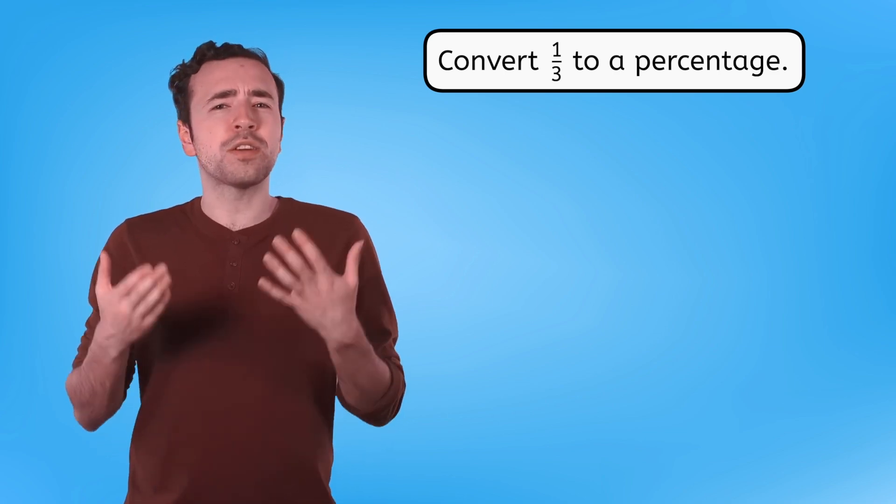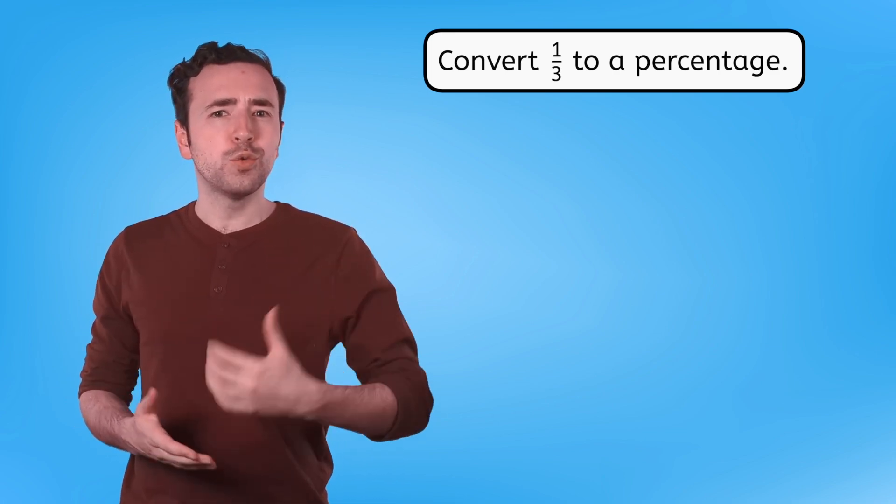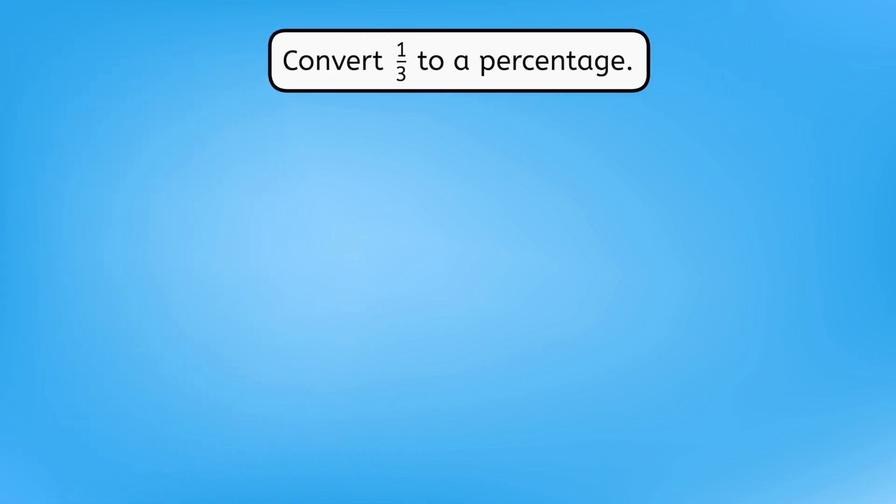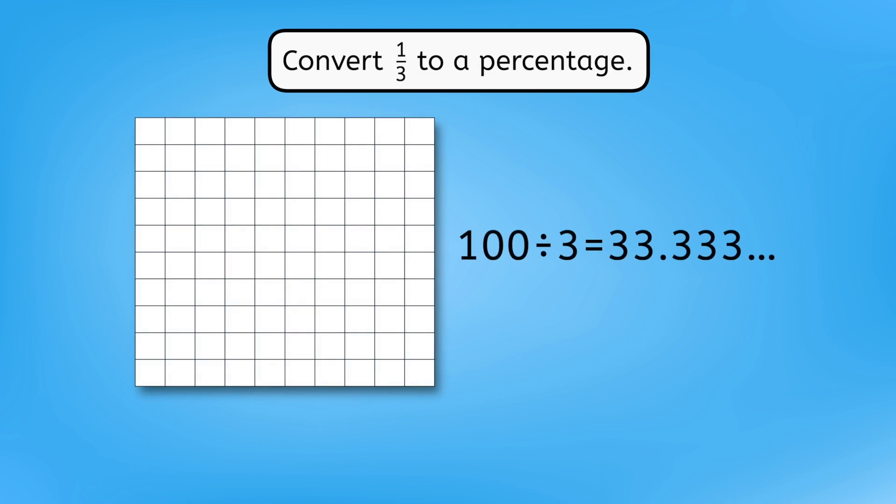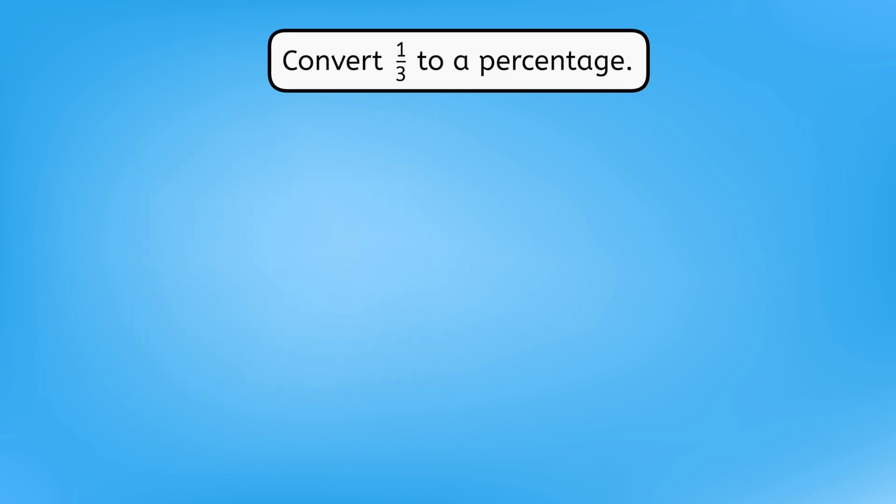But what about the fraction from Max's question? How would we convert one-third to a percentage? We can't split the grid into three equal parts, so the hundred-grid strategy won't work. Is there anything we can multiply the numerator and denominator by to get a fraction out of a hundred?